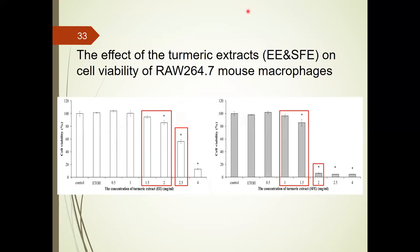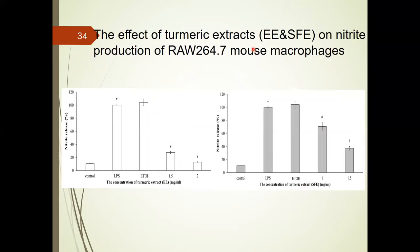In our previous study, we used LPS and RANKL to stimulate RAW 264.7 mouse macrophages for osteoclast differentiation. First, we determined the cytotoxicity of turmeric extract in macrophages. We indicate that ethanol extract at a concentration below 2 mg/mL can maintain 80% cell viability. In contrast, SFE can maintain 80% cell viability at a concentration below 1.5 mg/mL.